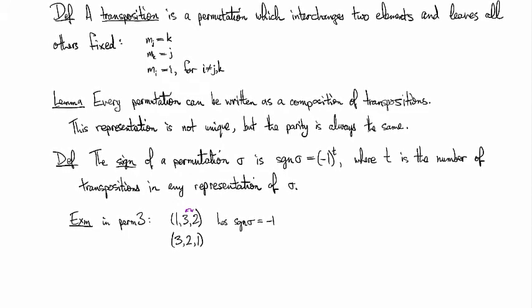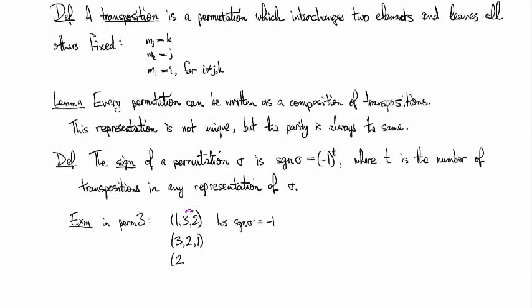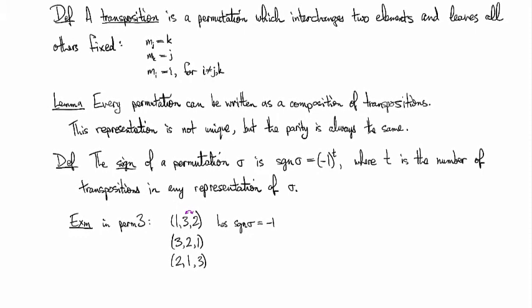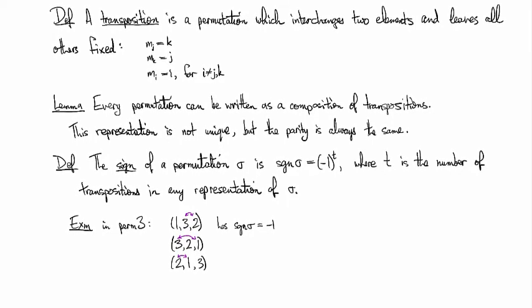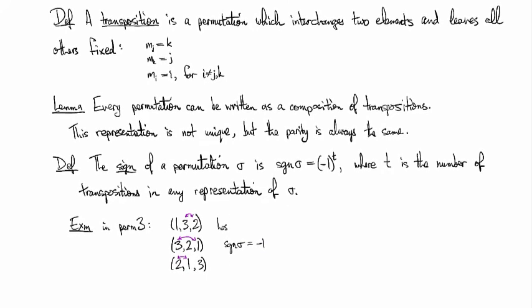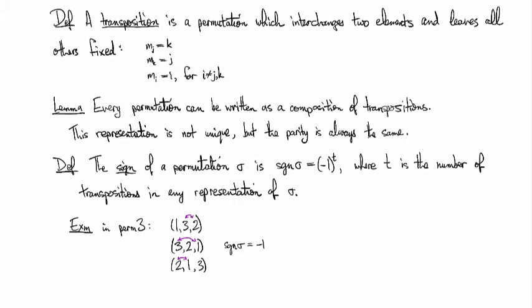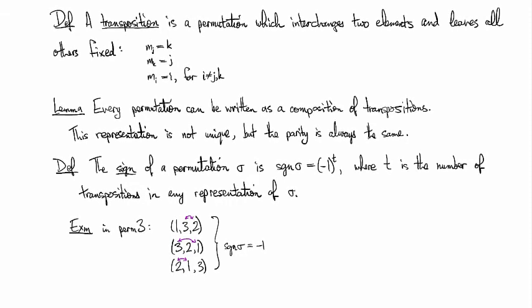And if we interchange one and two, then we get 2, 1, 3. So these — 1,3,2 and 3,2,1 and 2,1,3 — are the ones that have sign negative one.